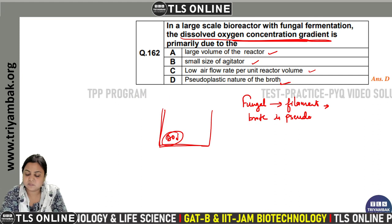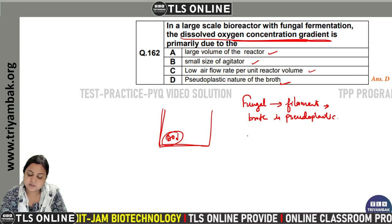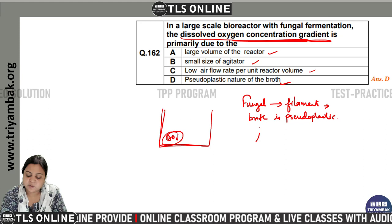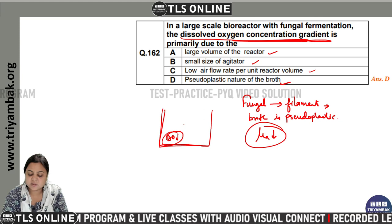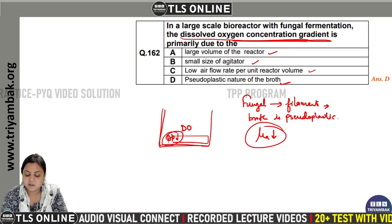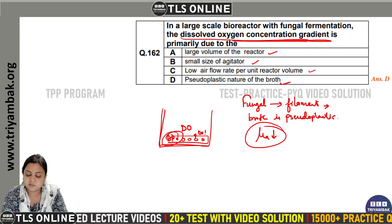In a pseudo-plastic fluid, if we increase the shear rate, the apparent viscosity will decrease. As a result of this behavior, the oxygen concentration will form a gradient throughout the reactor.